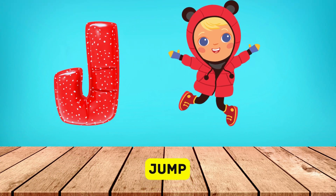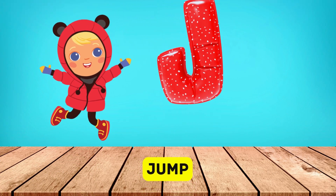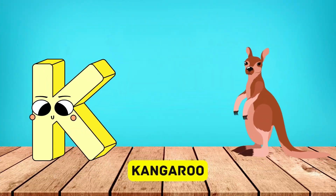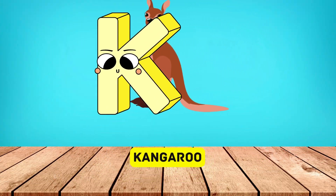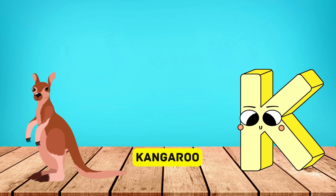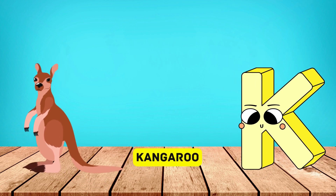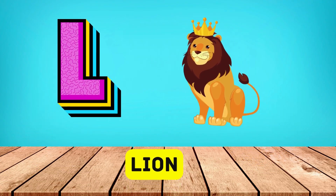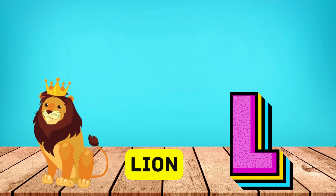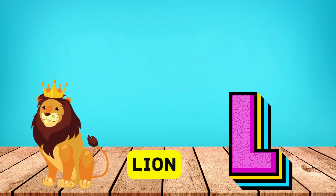J is for jump, j-j-jump. K is for kangaroo, k-k-kangaroo. L is for lion, l-l-lion.